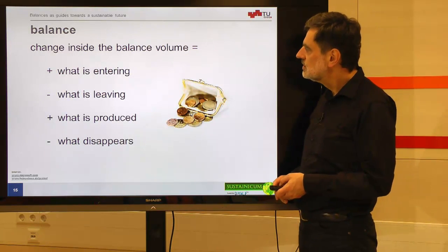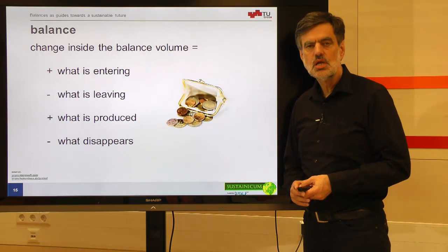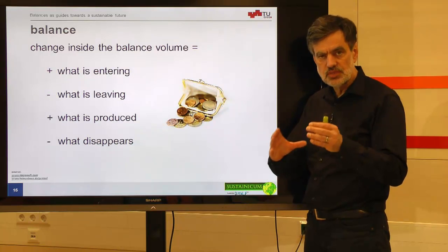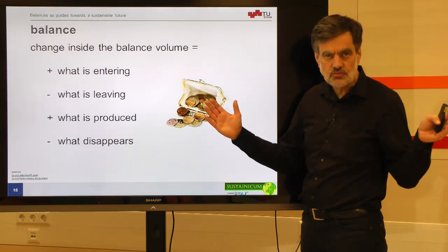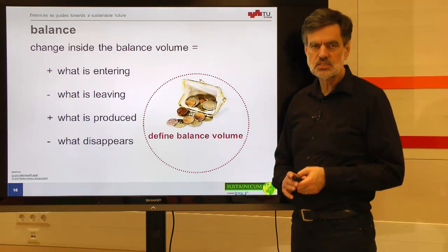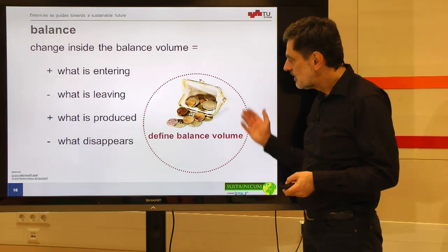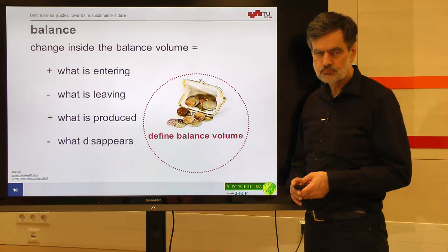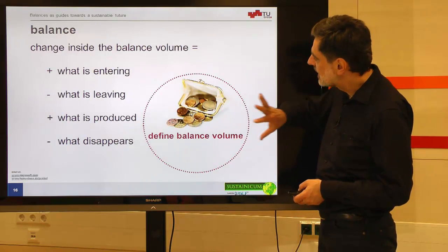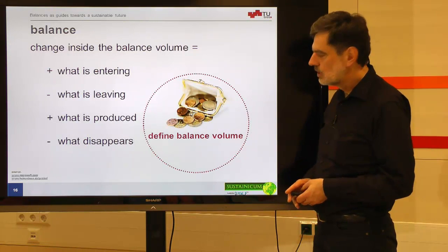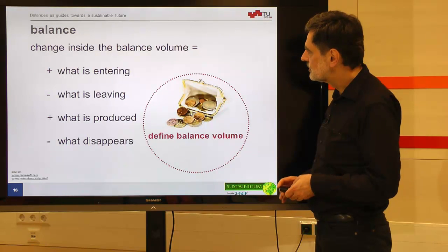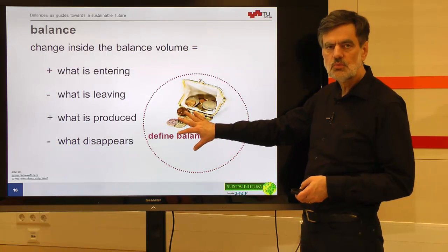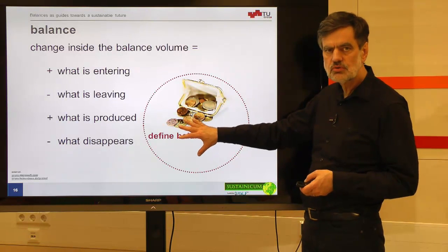What we need in the first step is to define the balance volume — the system we want to look at — and define the boundary between this system and the environment, the rest of the world. We do that by defining the balance volume and specifying a balance boundary, given here as a red dotted line. We look at the change inside this balance volume and how that changes due to different effects.